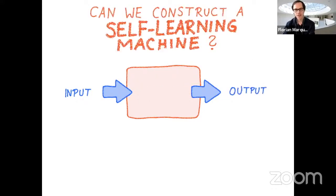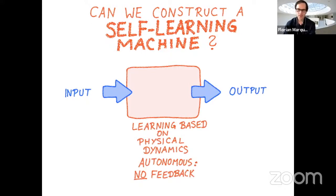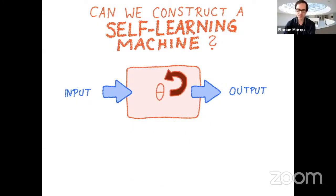But this raises the question: can we actually construct a self-learning machine? What I mean by that is that the learning would be based purely on physical dynamics — purely autonomous, with no feedback. You might still supply some energy, maybe come in with some fields to generate some pulse dynamics, but none of this would depend on the current state of the machine. All the dynamics needed for training and learning, not only for evaluation but also for training, would be going on internally inside the machine.